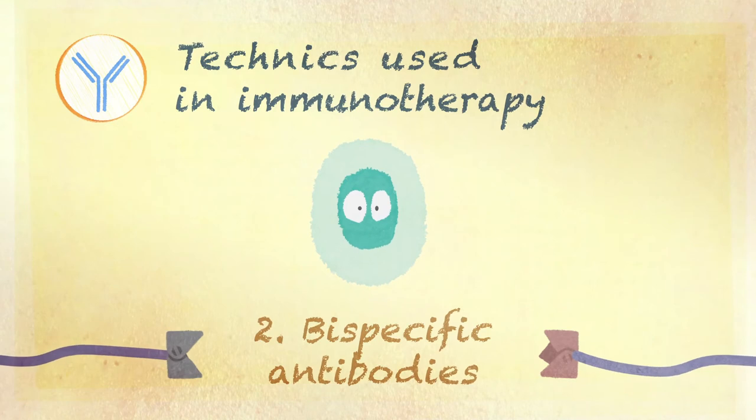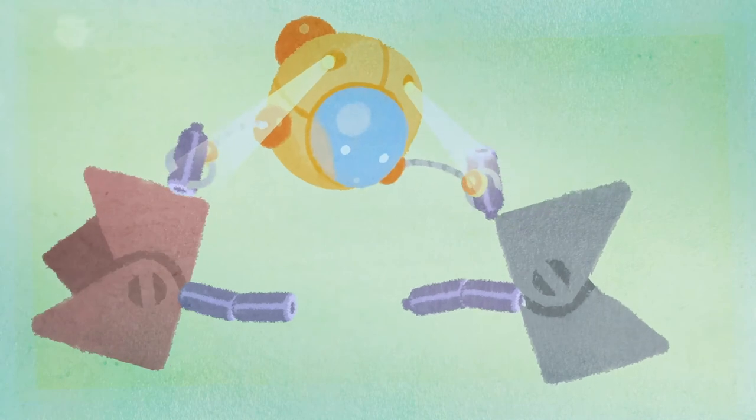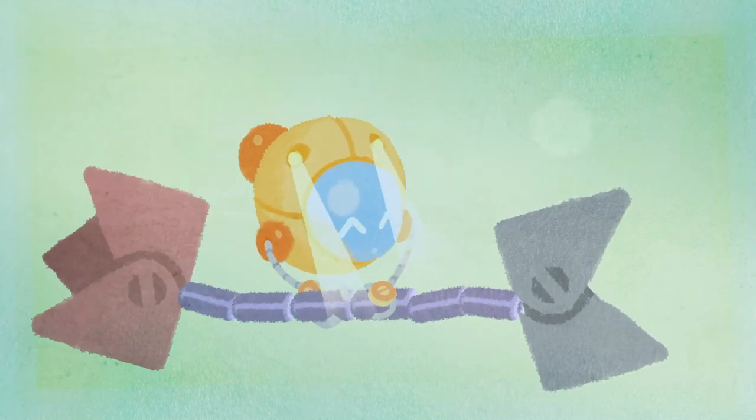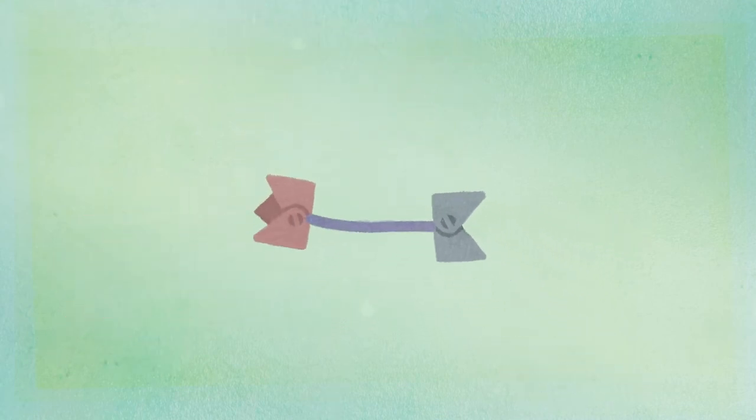Bi-specific antibodies. The bi-specific antibody is produced in the laboratory. It's a bit like a link that is designed with two hooks on each side. One hook binds to a cancer cell and the other to a killer cell.